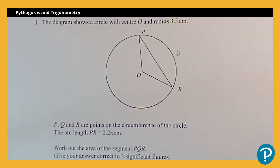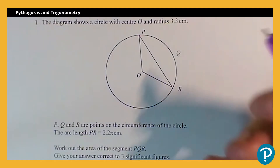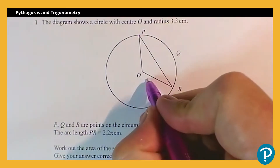We're looking at a problem that's going to involve some trigonometry. First thing, let's read through the question. We've got a diagram showing a circle, centre O, radius 3.3. I'll mark that on a diagram.